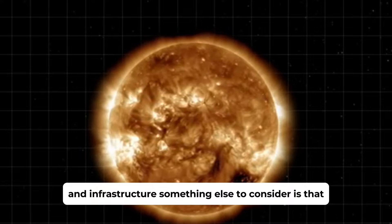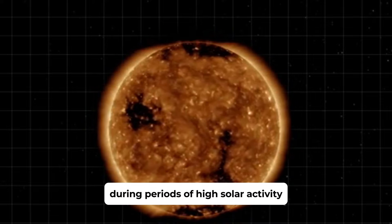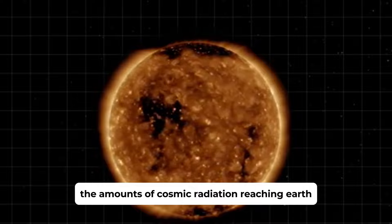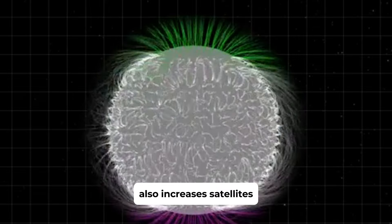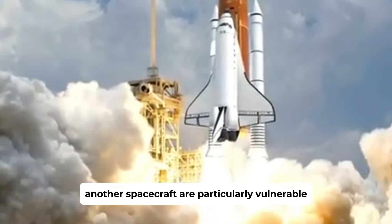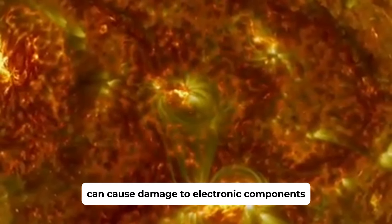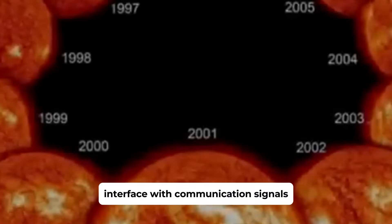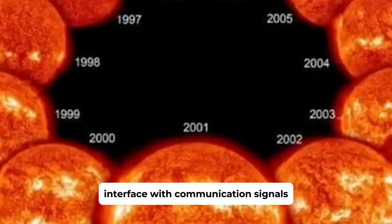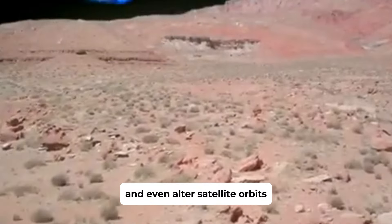Something else to consider is that during periods of high solar activity, the amount of cosmic radiation reaching Earth also increases. Satellites and other spacecraft are particularly vulnerable to increased solar activity. The charged particles from the sun can cause damage to electronic components, interfere with communication signals, and even alter satellite orbits.